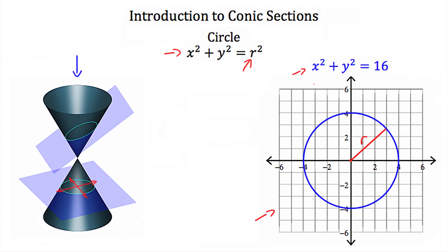This particular circle — x squared plus y squared is equal to 16 — well, 16 you can think of as 4 squared, or r squared, and that means r is equal to 4. Notice that from the center we intercept our x-axis at 4 and negative 4, and our y-axis at 4 and negative 4. Also notice that this circle is symmetrical through this center. I can draw an axis of symmetry in any direction, and as long as it passes through the center, our circle is symmetrical across it.